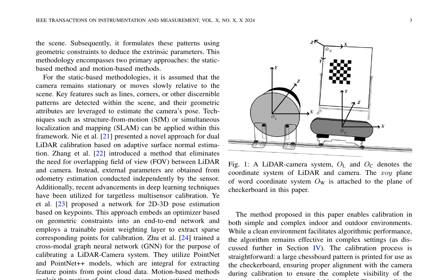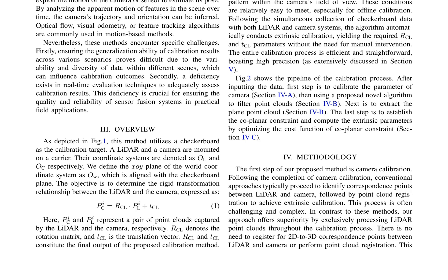However, existing methods encounter specific challenges, including ensuring the generalization ability of calibration results across various scenarios and the lack of real-time evaluation techniques to assess calibration results. This paper proposes a novel method that utilizes a checkerboard as the calibration target, mounted on a carrier with a LiDAR and a camera. The objective is to determine the rigid transformation relationship between the LiDAR and the camera, expressed as P_IC = R_CL · P_IL + T_CL. The proposed method enables calibration in both simple and complex indoor and outdoor environments, and the entire process is efficient and boasts high precision.